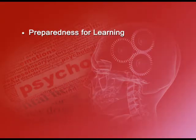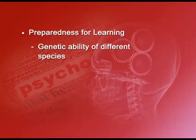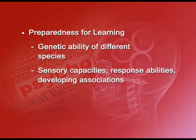Preparedness for learning is the third factor — the facilitator in this process. By definition, preparedness is the genetic ability of different species. It refers to the sensory capacities, the responsivities, and even pertains to developing associations. It is genetic — inbuilt into certain species and organisms. Birds, dogs, cats, rabbits, and human beings all have different frameworks with respect to their brain, central nervous systems, and other cognitive abilities. So this determines how much they can acquire certain skills as compared to other species.